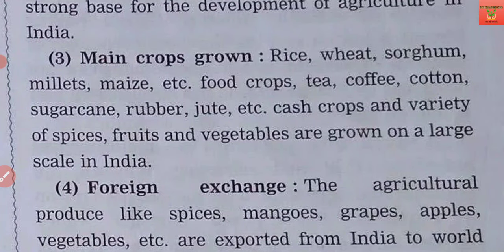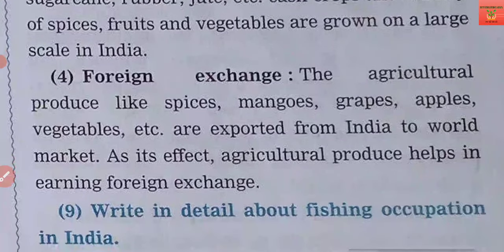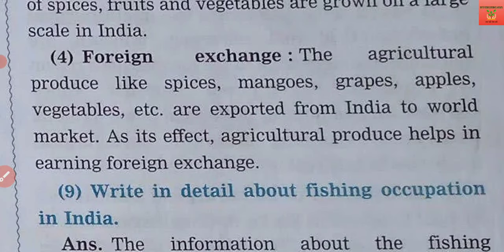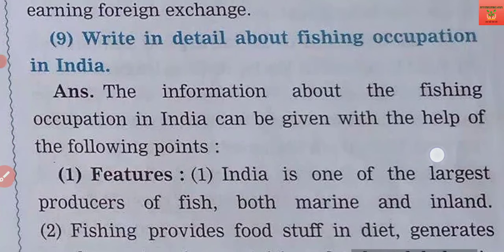Main crops in India include rice, wheat, maize, tea, coffee, cotton, rubber, jute, cash crops, spices, fruits, and vegetables — all grown on a large scale. For foreign exchange, India exports spices, mangoes, grapes, apples, and vegetables to other countries. These are the key features of agriculture in India.